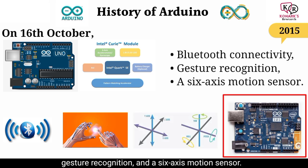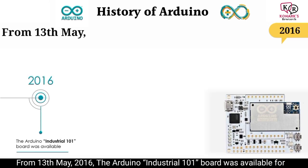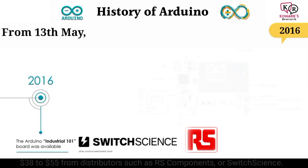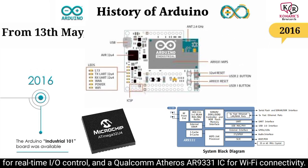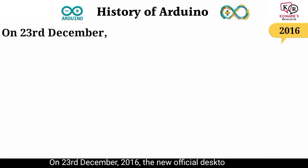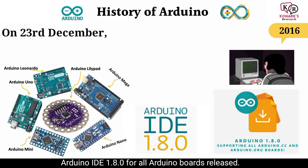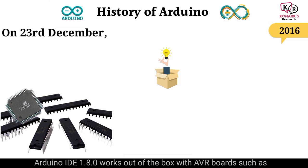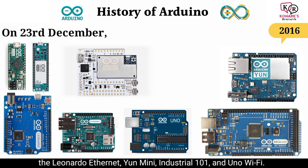From 30 May 2016, the Arduino Industrial 101 board was available for $38 to $55 US dollars from distributors such as RS Components or Switch Science. Arduino Industrial 101 combines an Atmel ATmega32U4 AVR microcontroller for real-time I/O control and a Qualcomm Atheros AR9331 IC for Wi-Fi connectivity. On 23 December 2016, the new official desktop editor Arduino IDE 1.8.0 was released for all Arduino boards. It works out of the box with AVR boards such as Uno, Mega, Eon, and Micro, and additionally supports the Leonardo, Ethernet, Eon Mini, Intel 101, and Uno Wi-Fi.